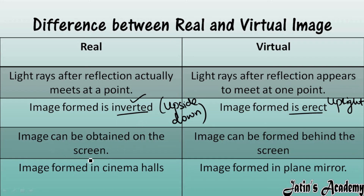Real images can be obtained on a screen, because in a real image the reflected rays actually meet at one point. Virtual images are always formed behind the screen. Examples: the image formed in a cinema hall is a real image, and the image formed in a plane mirror is a virtual image.